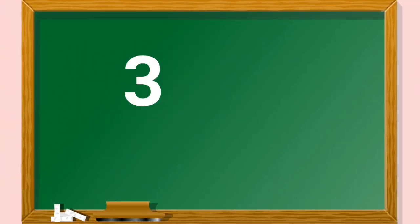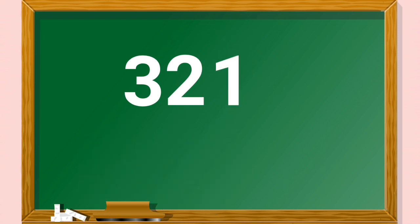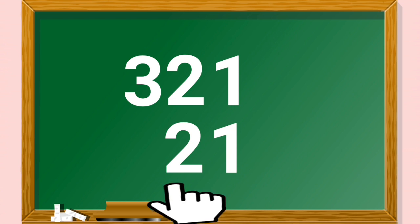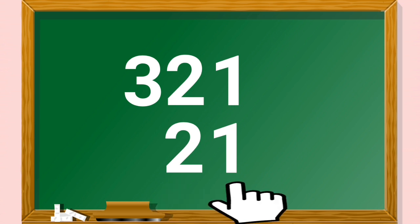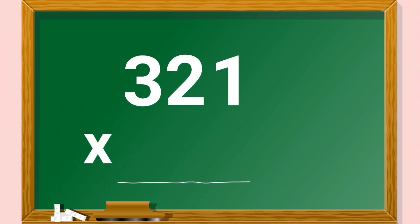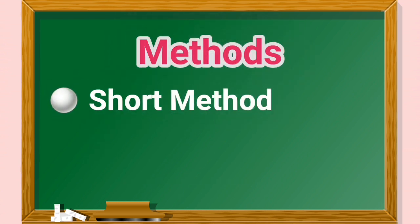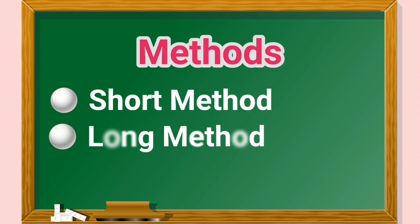In this lesson, we will multiply three-digit numbers by two-digit numbers. And there are different methods to do this: the short method, long method, and lattice method.